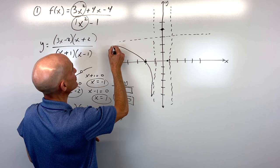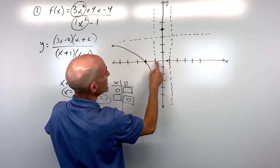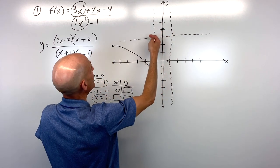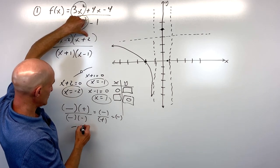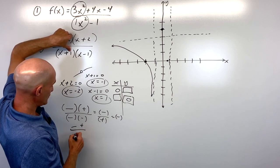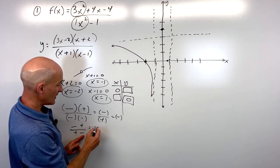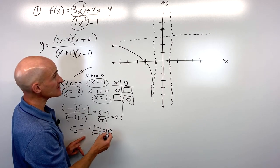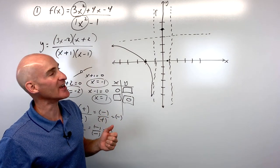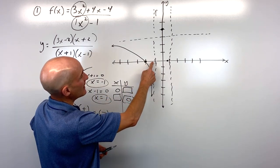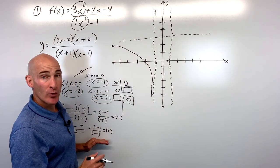From the right side of x=-1, plug in -0.9. The factor (3x-2) is negative, (x+2) is positive, (x+1) is positive, (x-1) is negative. Numerator: negative × positive = negative. Denominator: positive × negative = negative. Negative divided by negative is positive — the graph goes up toward positive infinity. If you don't like sign analysis, you can just plug in actual values and plot them.